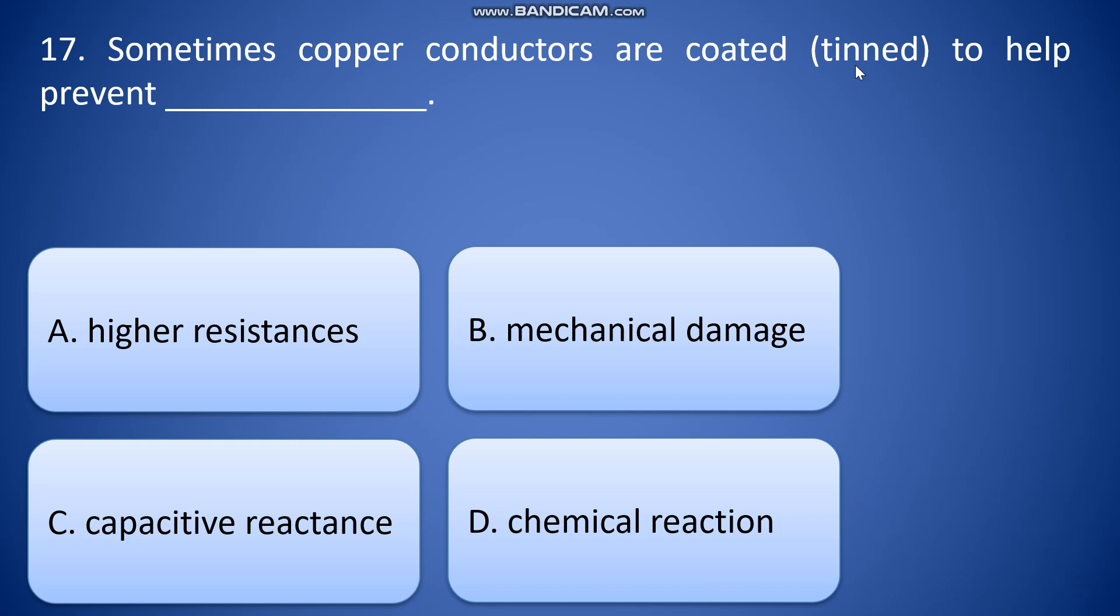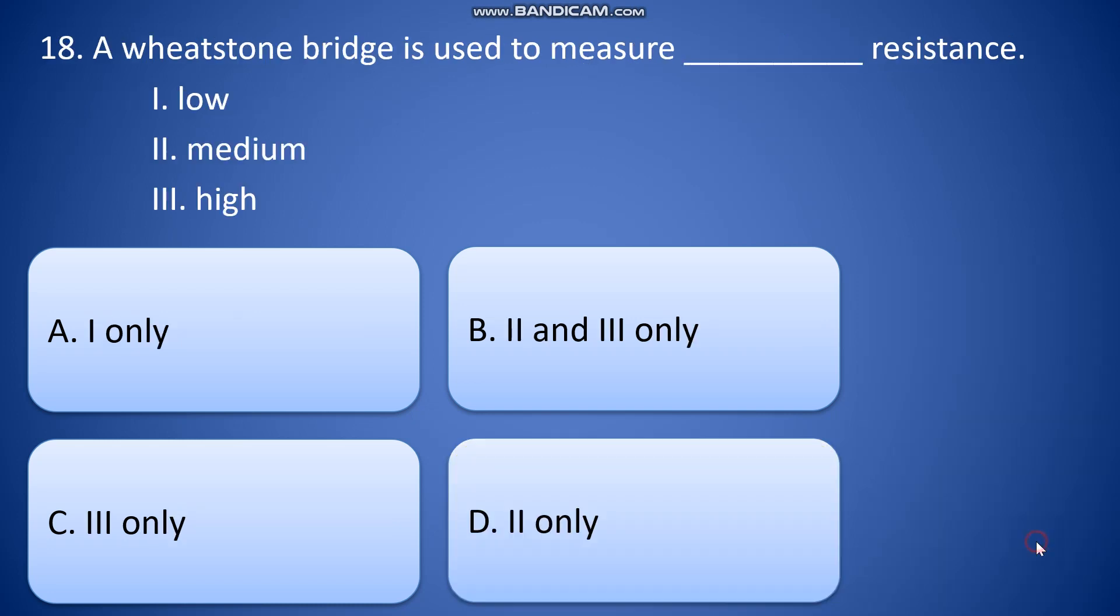Sometimes copper conductors are coated with tin to help prevent: A: higher resistances, B: mechanical damage, C: capacitive reactance, D: chemical reaction. So the answer is D, chemical reaction. A Wheatstone bridge is used to measure blank resistance.